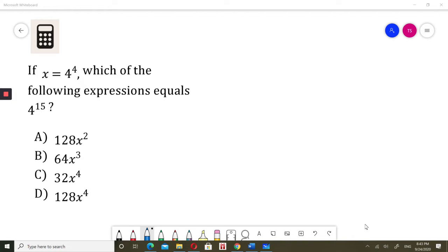A: 128x squared. B: 64x cubed. C: 32x to the power of 4. D: 128x to the power of 4.